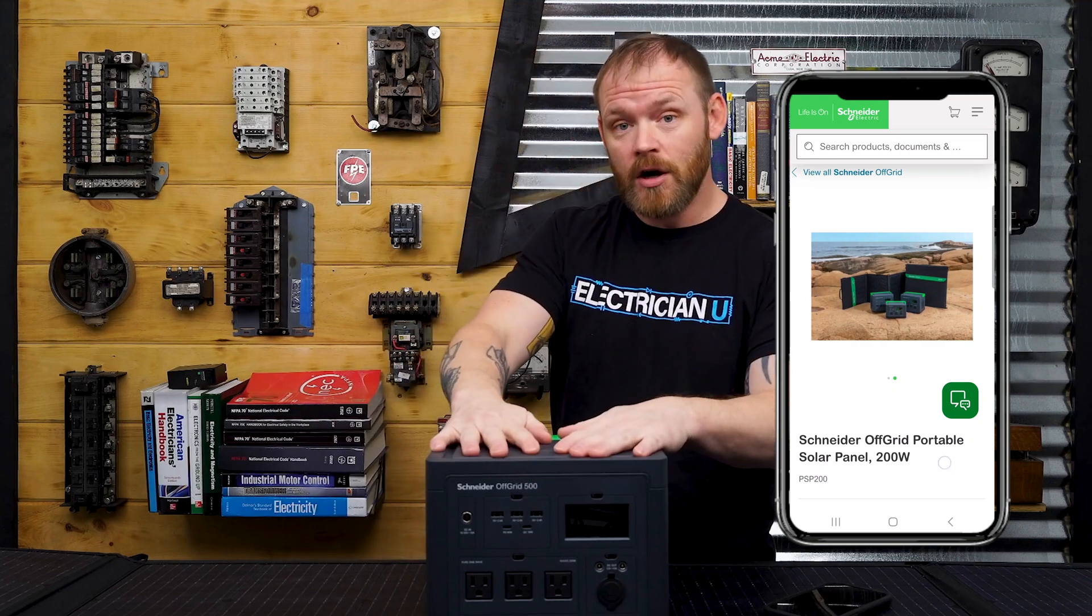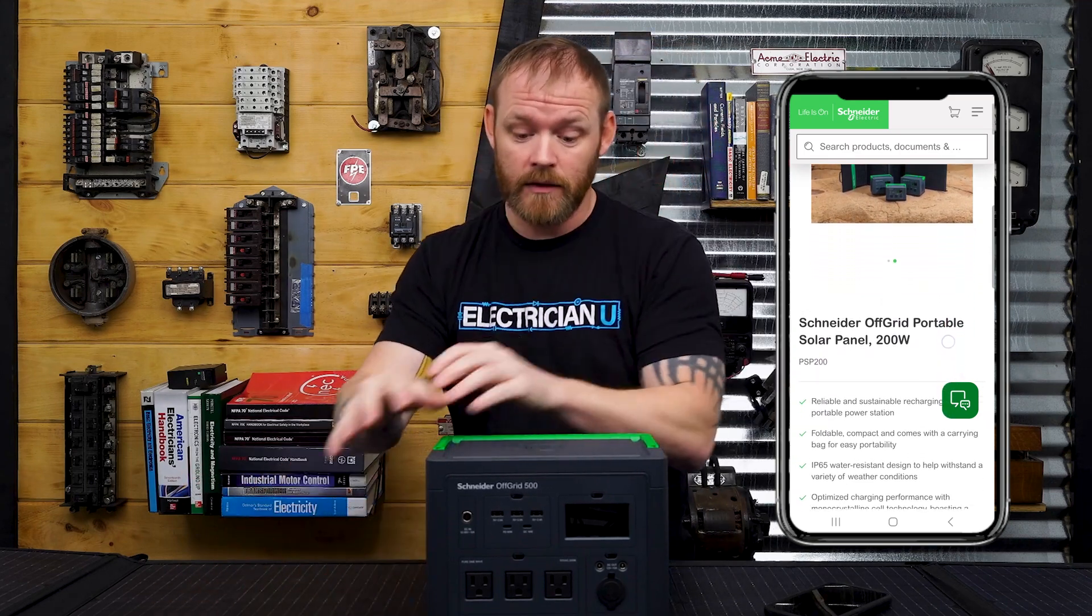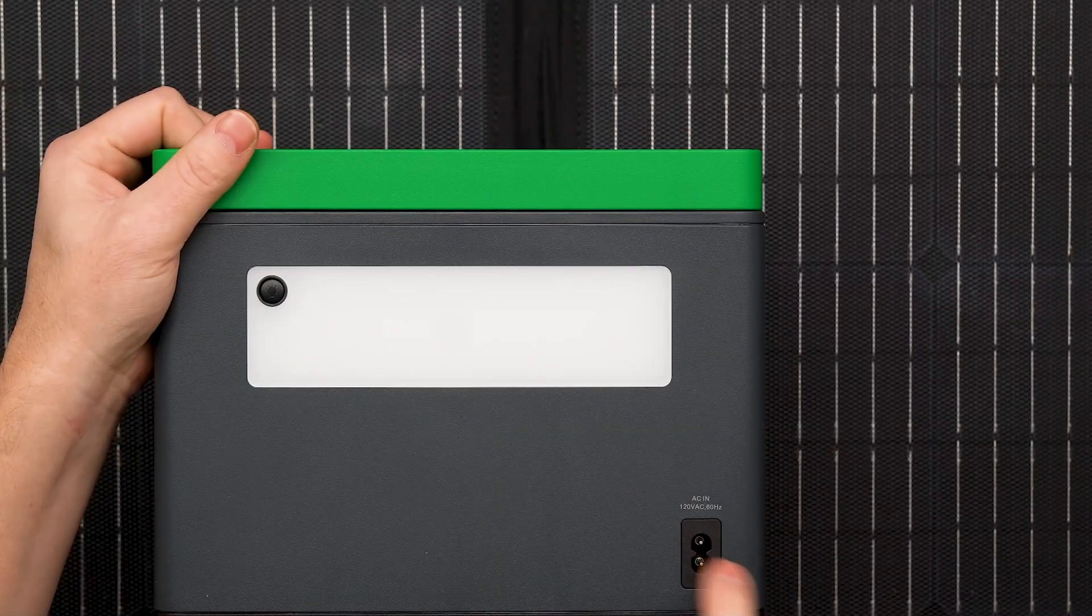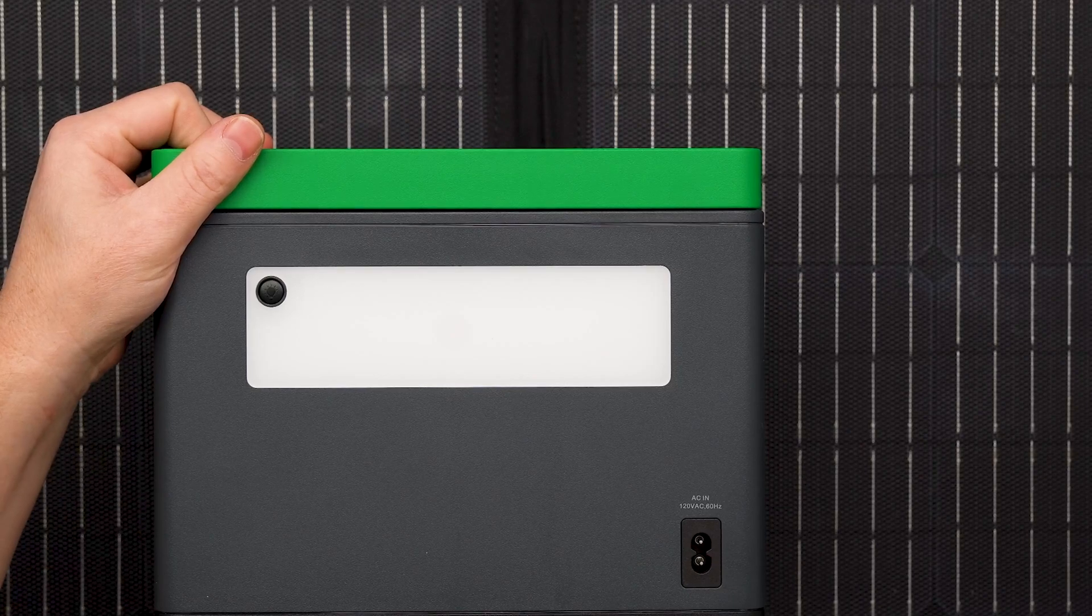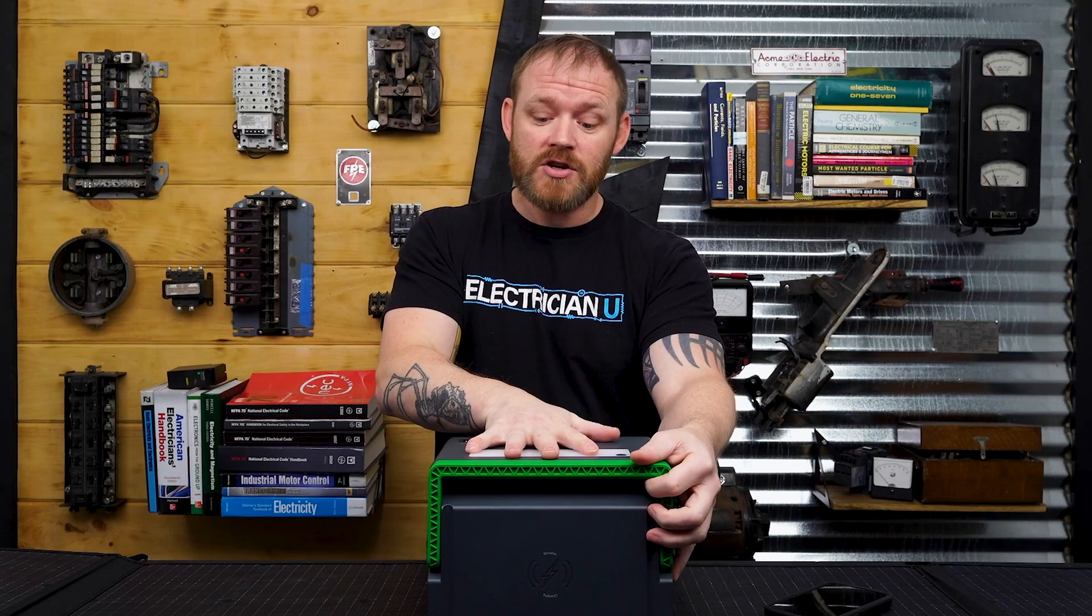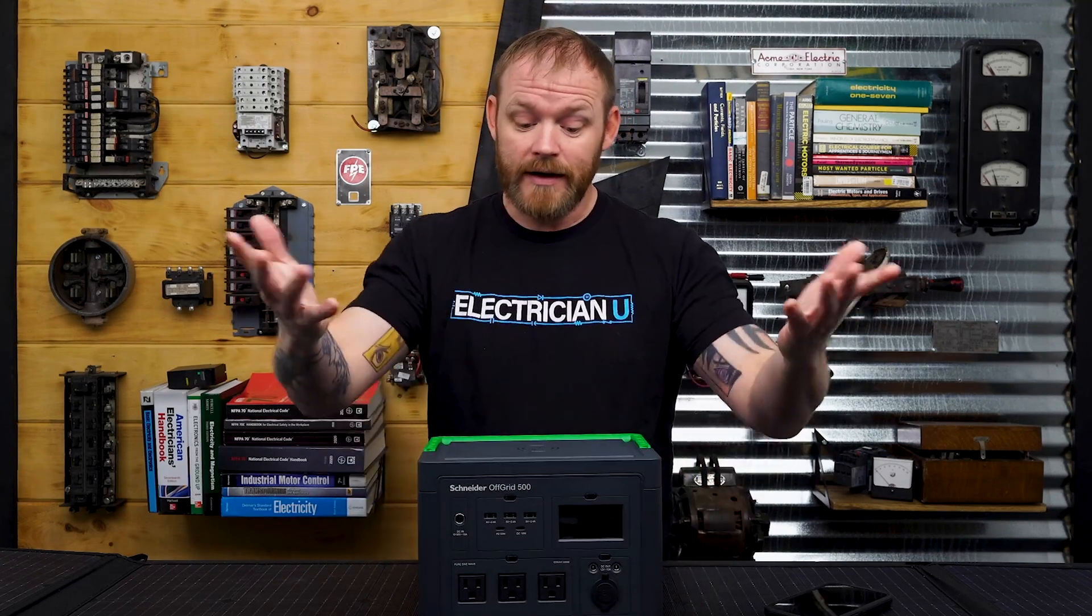But when you plug this in to charge it, if you're not using a solar panel to charge it, which would be DC to DC charging, the little plug in the back will plug into a wall outlet, which is taking AC in and charging a DC battery. So in that case, we're using rectification. So this is a really great device that has all of it.